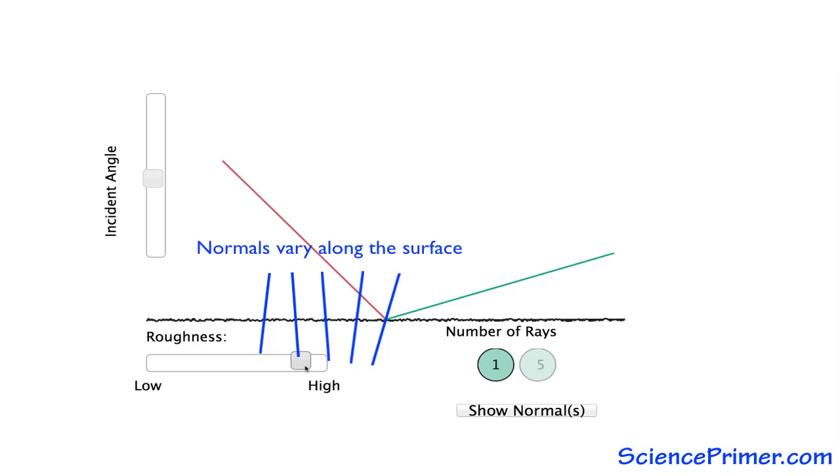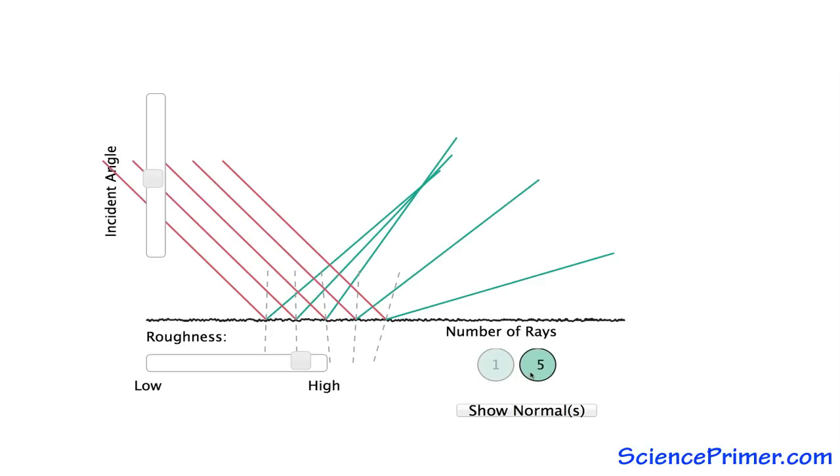With this variation, normals at neighboring points are no longer parallel to each other. Since the angle of incidence depends on the normal line at the exact point a ray hits, the incident angles for a set of parallel rays will not be the same and each reflected ray will have a different angle of reflection. In other words, the rays scatter.